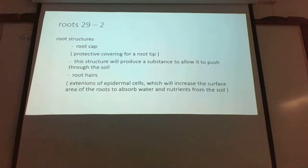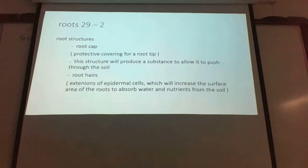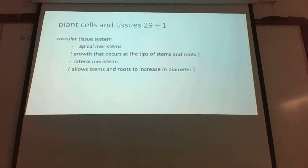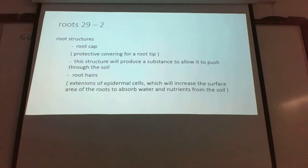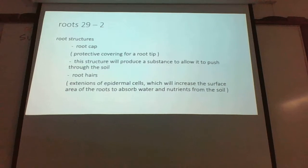In review, don't forget we have lateral meristems and apical meristems — these are different types of structures to keep in mind. Lateral meristems grow out from the middle, while apical meristems occur at the tips of the stems and roots. The root cap is an example of the types of cells promoting that growth.